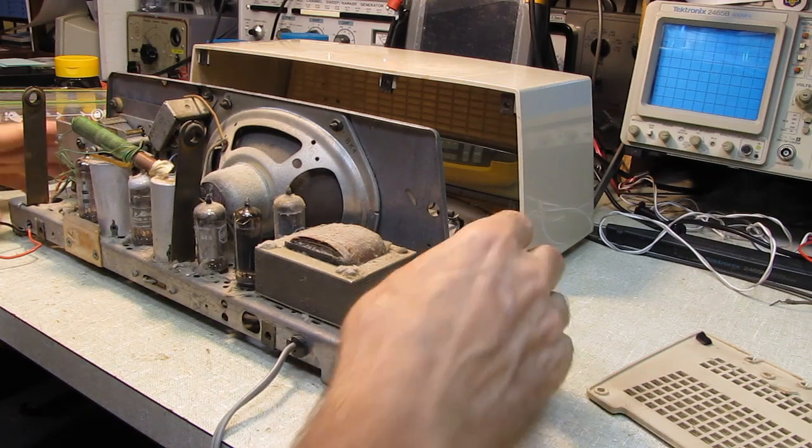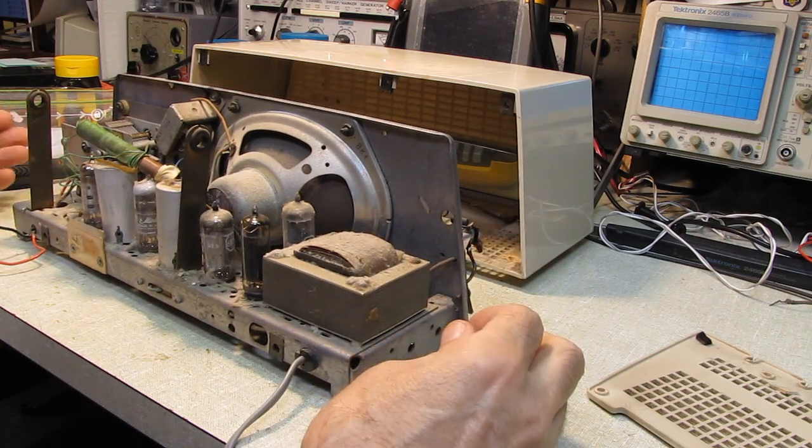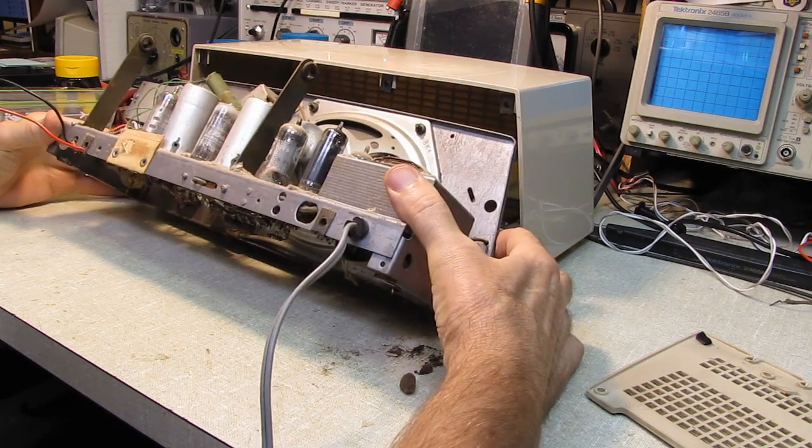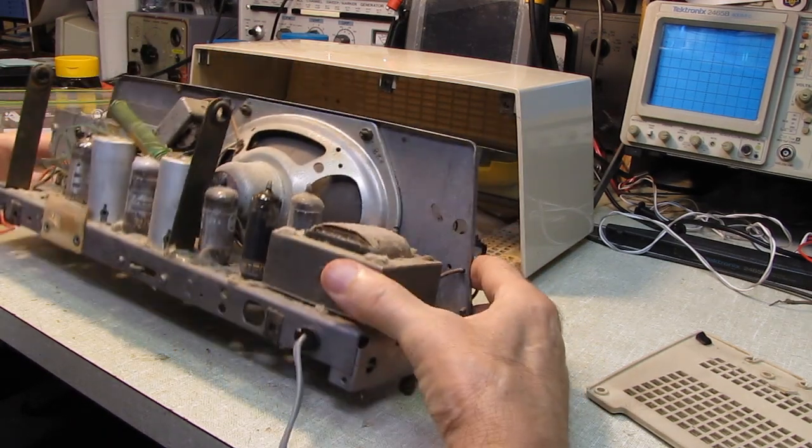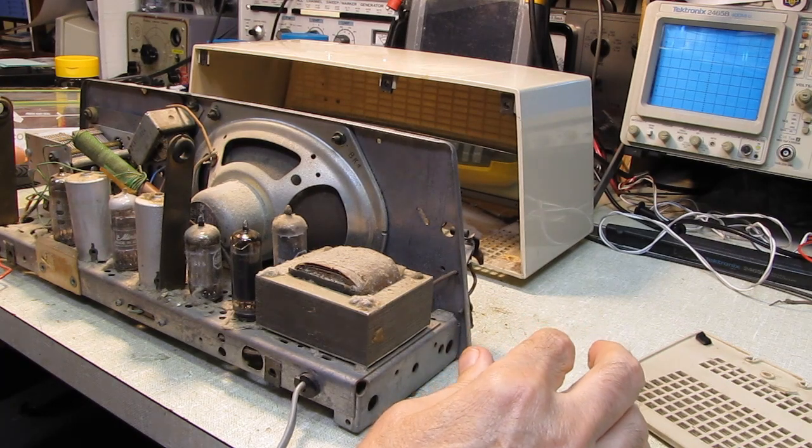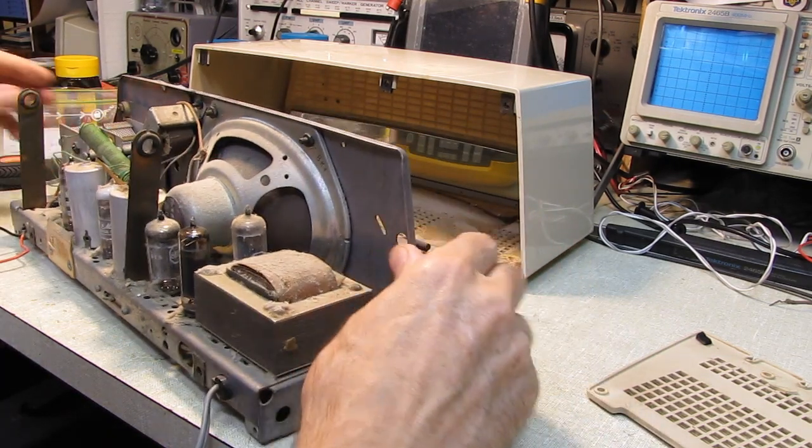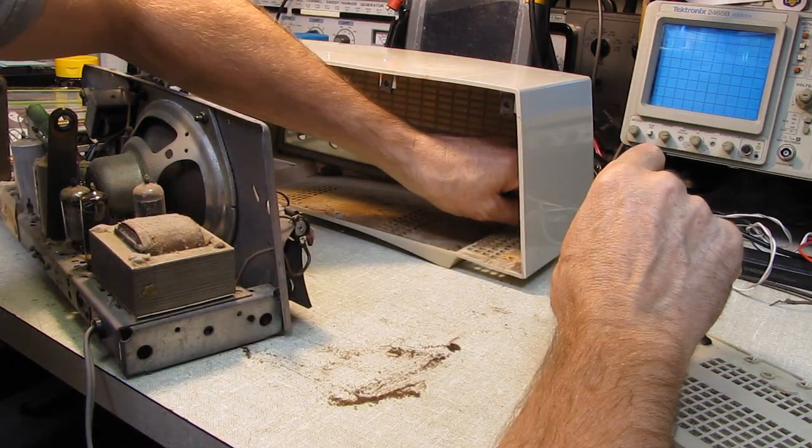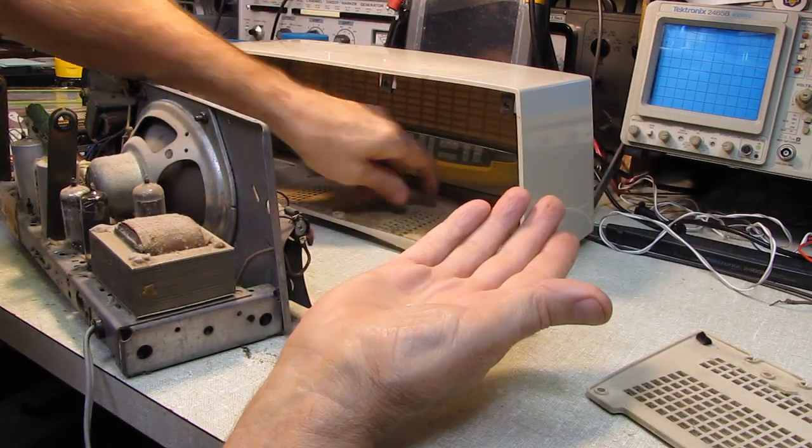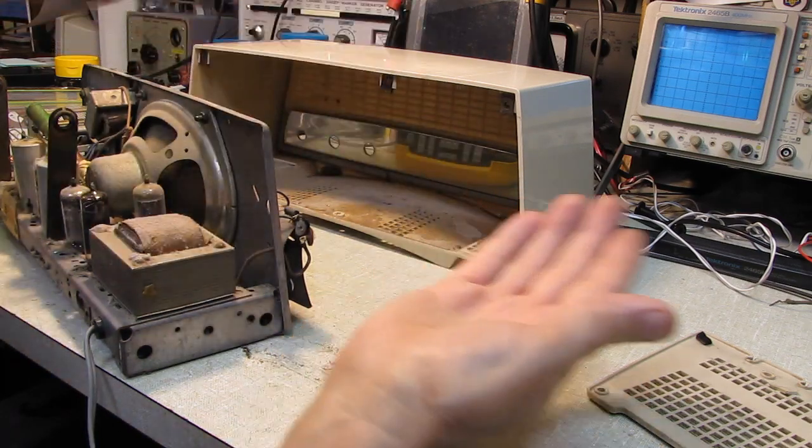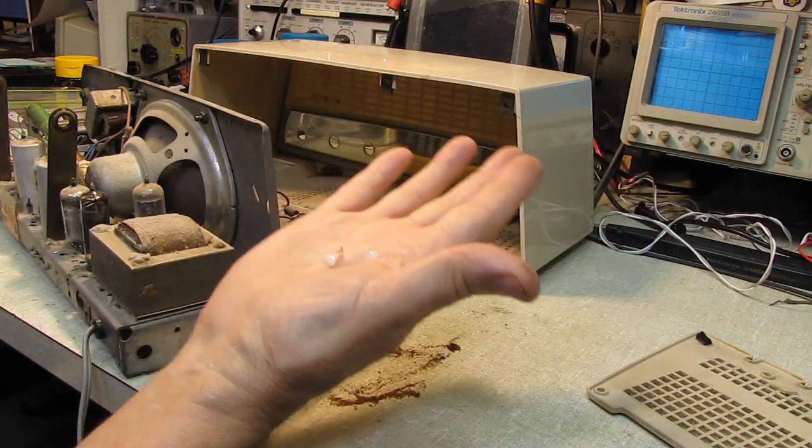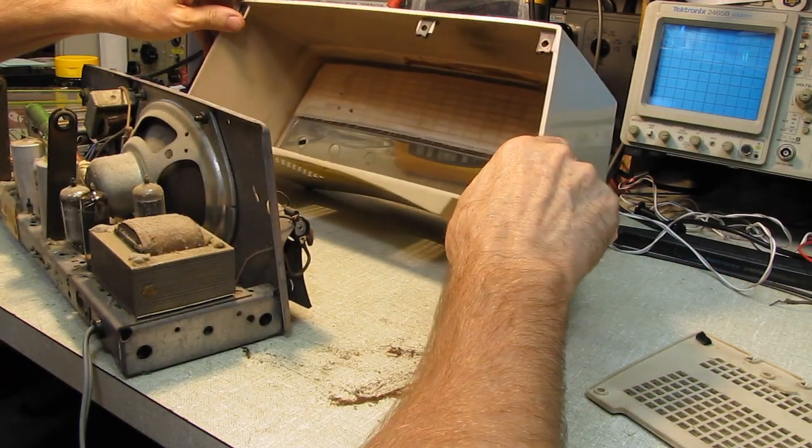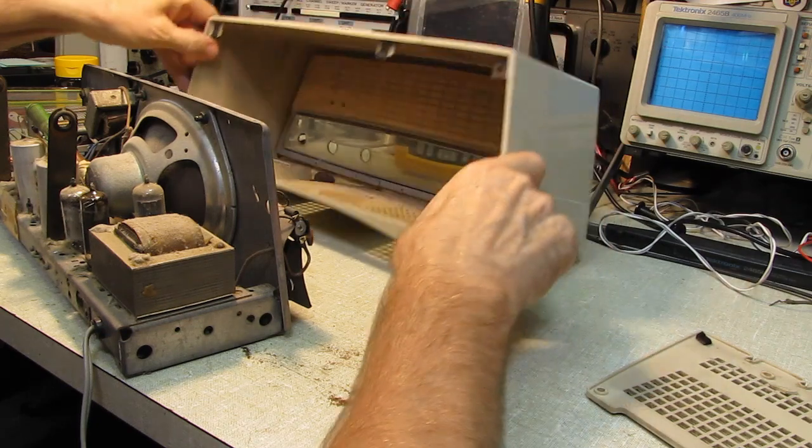Okay, we have the chassis pulled out of the cabinet here. That was a bit of a puzzle to get it out. It's got to be drawn back, tipped forward, and then rotated slightly to get it around. But we got it out of there. Let's see what we've got. I do see some pieces of the 6AQ5. That's what I heard rattling around inside of the cabinet.